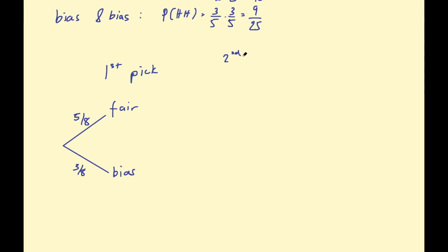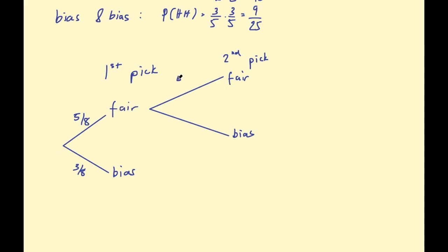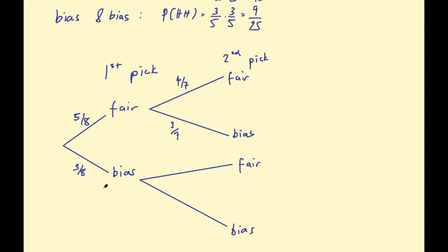On the second pick, the probabilities change because one coin has already been removed. If a fair coin was picked first, there are now four fair coins and three biased coins left among seven total — so four out of seven for fair, three out of seven for biased. If a biased coin was picked first, five fair coins remain out of seven, and two biased coins remain, giving two out of seven for a biased second pick.